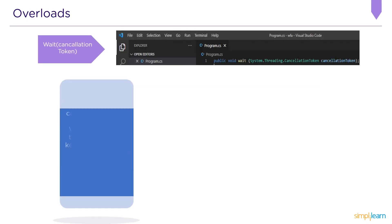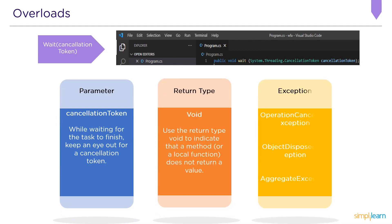Next, as shown on my screen, we have Wait(CancellationToken). The parameter is a CancellationToken: while waiting for the task to finish, keep an eye out for the cancellation token. The return type is void. For exception handling, we have three exceptions: OperationCancelledException when the token is deactivated, ObjectDisposedException when the task is disposed, and AggregateException for cancelled assignments.